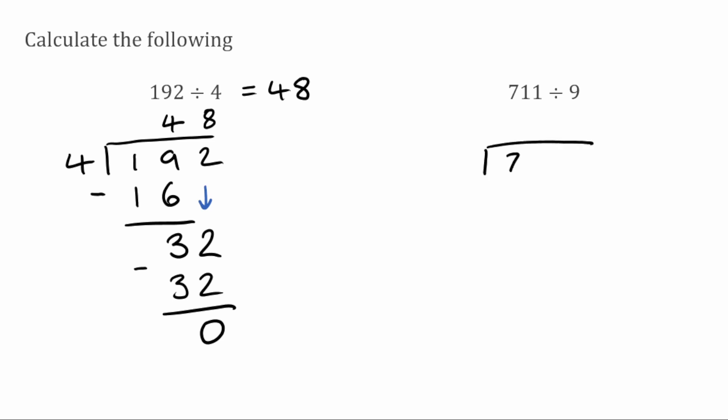Moving on, we've now got 711 divided by 9. So how many times can we fit 9 into 7? We can't, so we're going to move across to the next digit. So we've now got 71. 9 will fit into 71 seven times because 7 times 9 is 63. Now we want to subtract 63 from 71. This is a great example where lining the digits up is extremely useful because we can use the column method. So I've got 1 take away 3, so I'm going to borrow from the 7. 7 becomes 6, and the 1 comes across, so I've now got 11. So 11 take away 3 gives me 8. I've then got 6 take away 6, which is 0. So my answer to that subtraction is just 8.